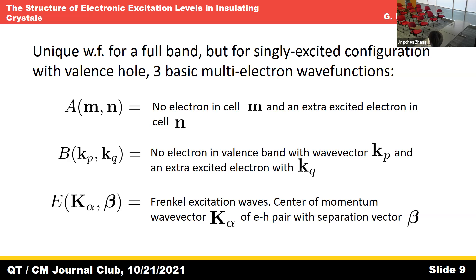What is this quantity? Like, it's no electron in cell M and extra excited electron in cell N — I understand the physical state, but what is A(M,N)? It's the multi-electron wave function — three basic multi-electron wave functions for a singly excited configuration. They're not necessarily equivalent because in some sense these are approximations. You write down a wave function, that is a state — like in a variational approach, your trial wave function is a state. It might be an approximation to the ground state but not necessarily the true ground state.